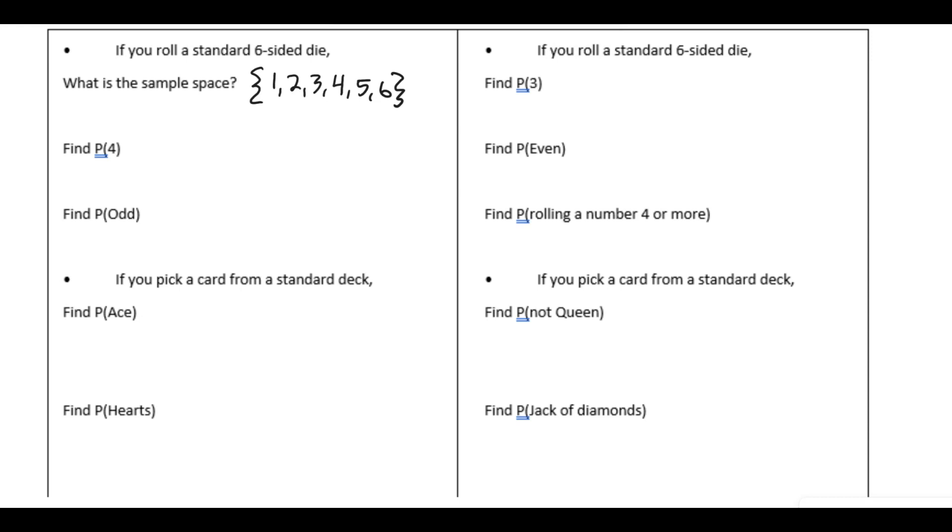So that is our sample space. Visualizing the sample space can help you with probabilities. In this case, we have some follow-up questions. Find P of four. So this is the probability of rolling a four. The probability is defined as the number of successes possible divided by the total number of outcomes, which is the size of the sample space.